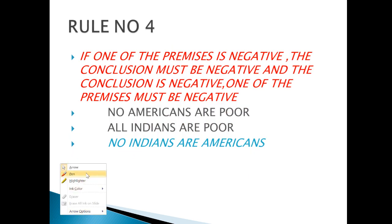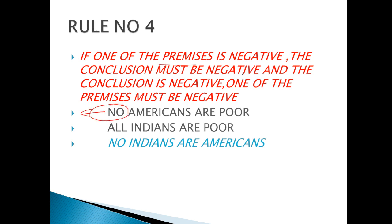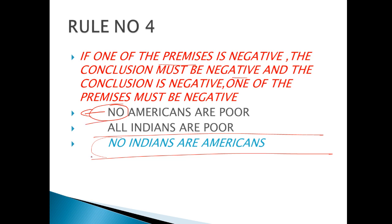Next rule क्या कहता है: अगर आपका एक premise negative है — that is 'no' — तो conclusion भी हमारा negative होगा। और अगर conclusion negative है तो एक premise भी negative होगी। यही मतलब है। अब इसको देखते हैं और सारे पिछले rules को लगाने की कोशिश करते हैं।